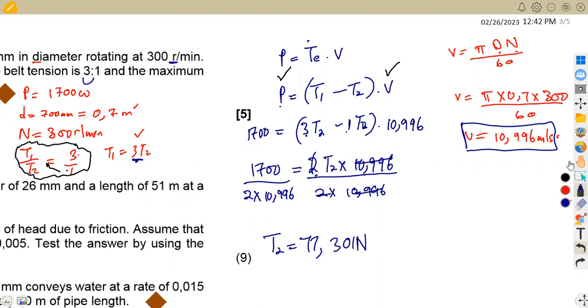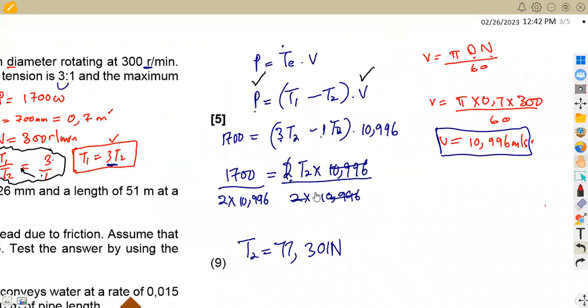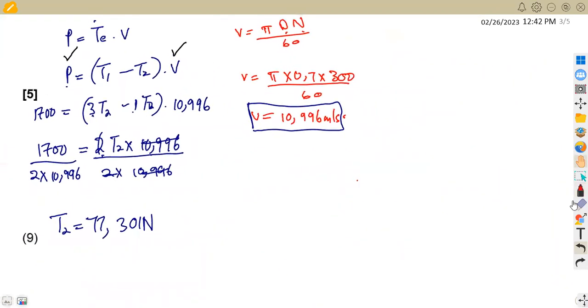Remember our purpose here is to calculate W, which we said we can calculate from T1, but we need to find T1, which we can calculate from this formula that T1 is equivalent to 3T2. So T1 is going to be 3 times T2, which is 77.301. So multiplying properly, you're going to obtain 231.903 Newton.